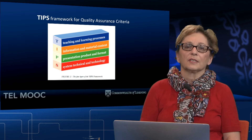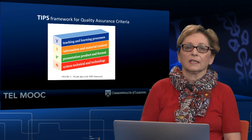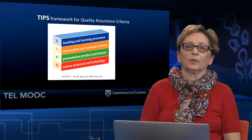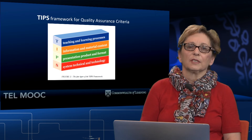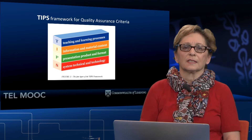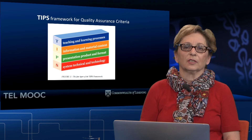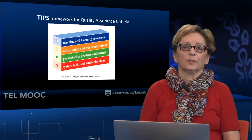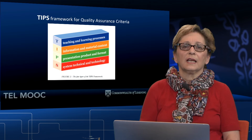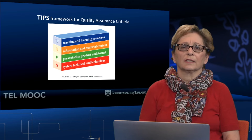The four layers of the TIPS framework relate to aspects of OER quality. T is for teaching and learning processes, I for information and material content, P for presentation, product, and format, and S for system, technical, and technology.